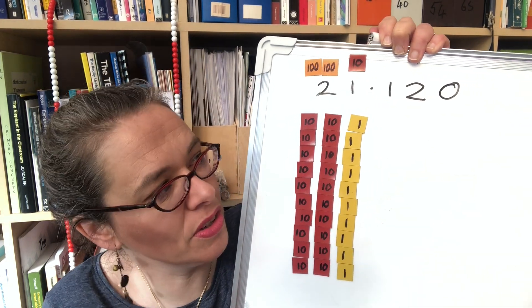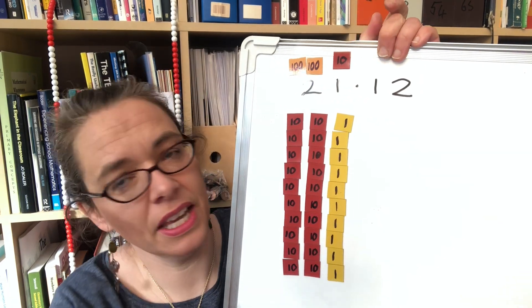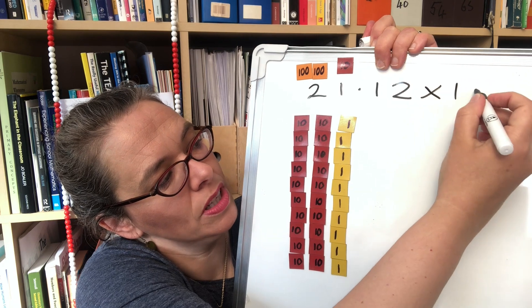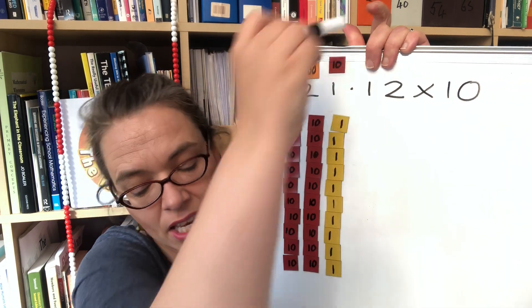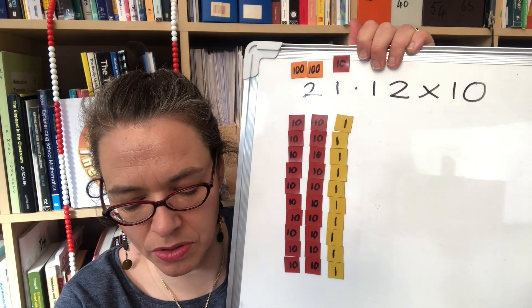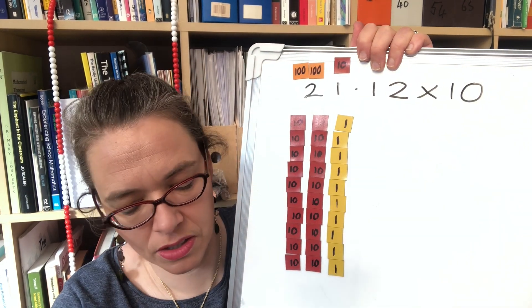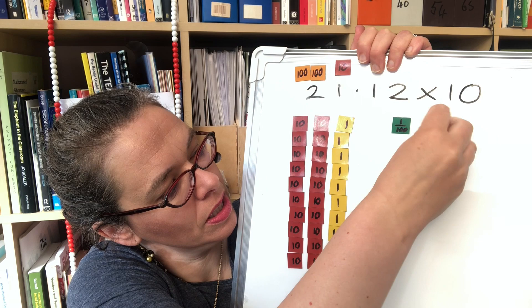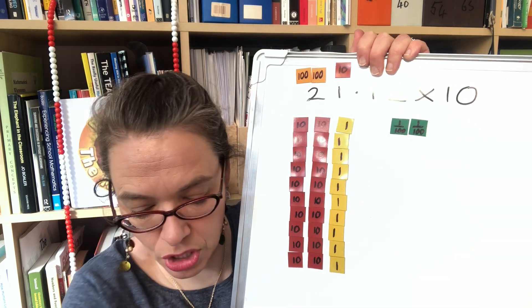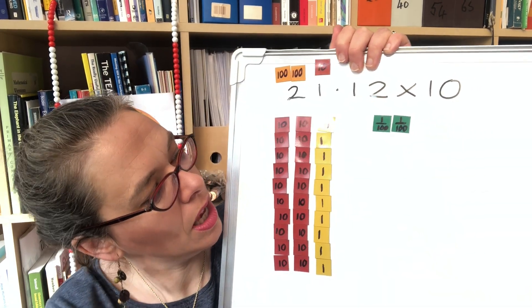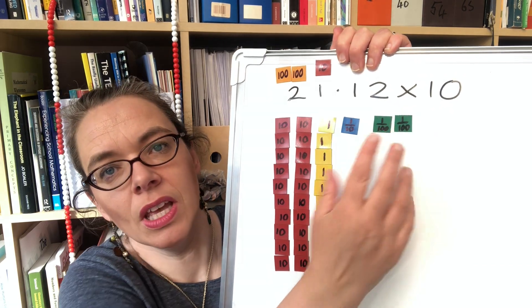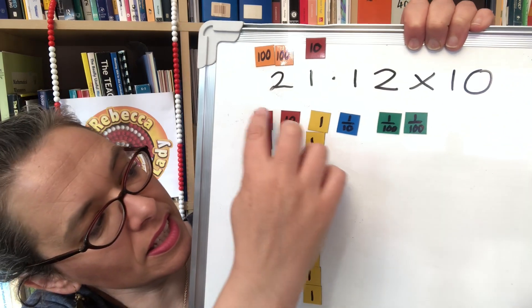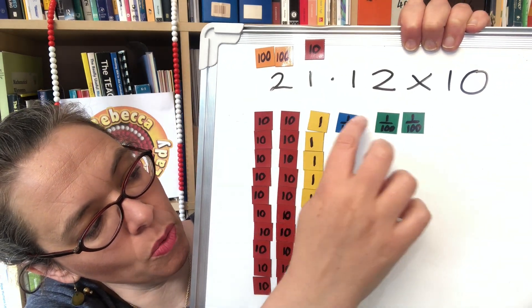You can have those kinds of conversations and then again you can build the calculation 21.12 times 10 if we use place value counters. So we're going to have two one hundredths and one tenth.